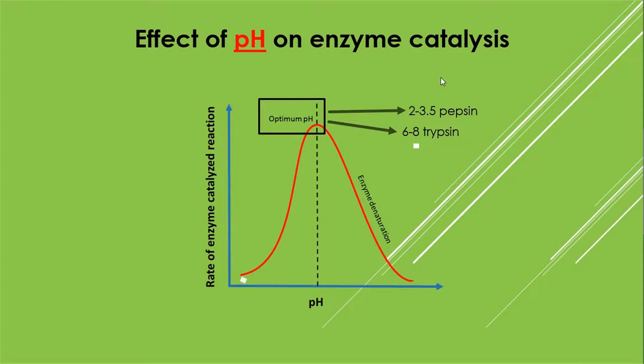Now the amino acids which are present at the active sites are affected by the change in pH, and that is why the enzyme loses its ability to catalyze substrate.